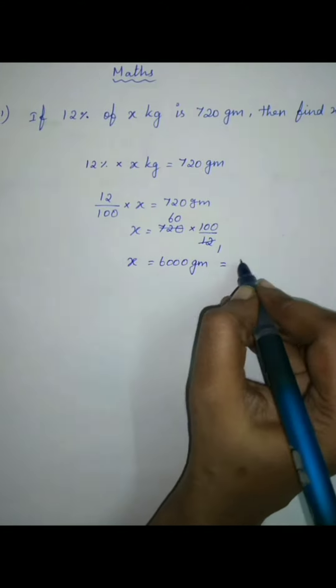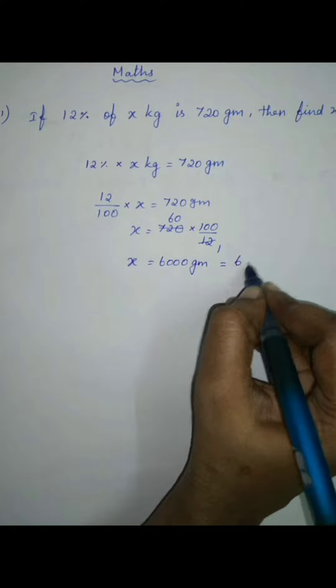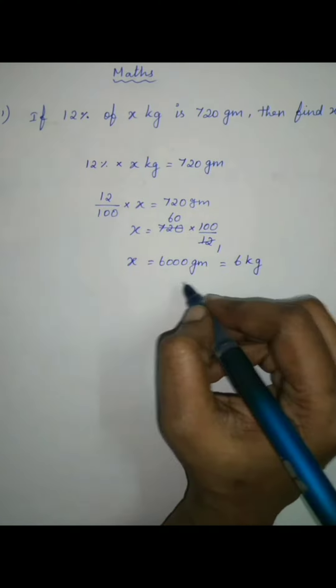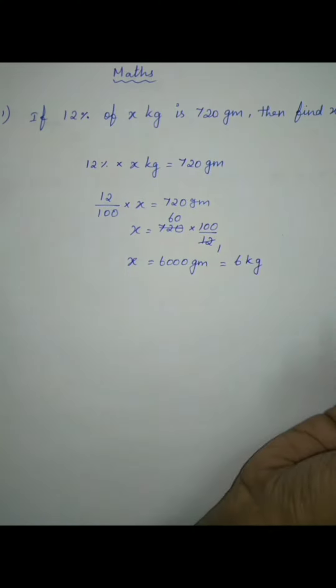So, 6000 grams is 6 kg, since 1 kg is 1000 grams. Therefore 6000 grams equals 6 kg.